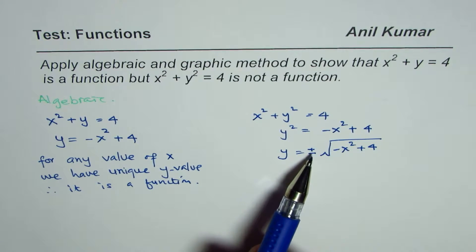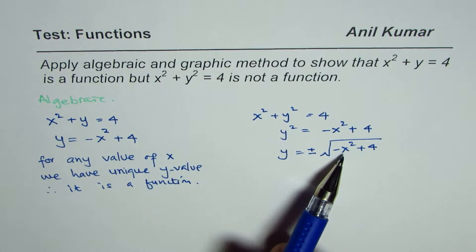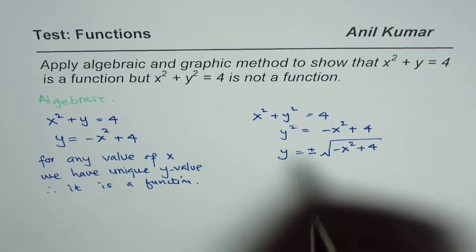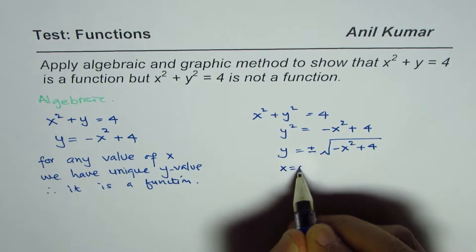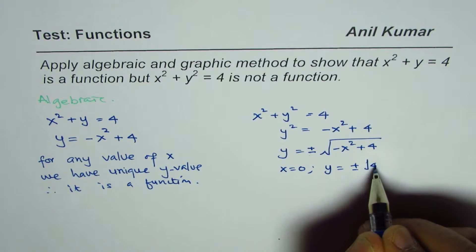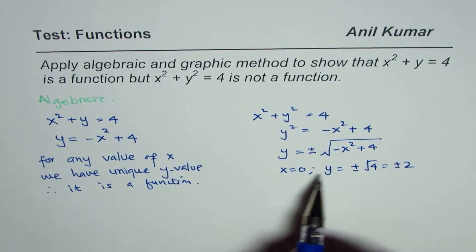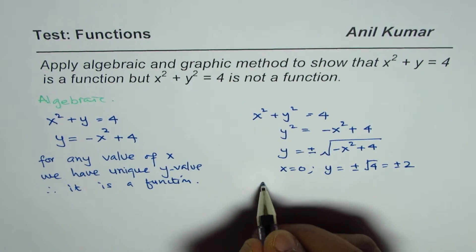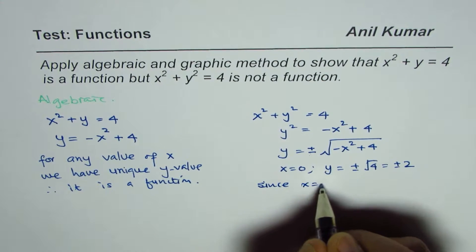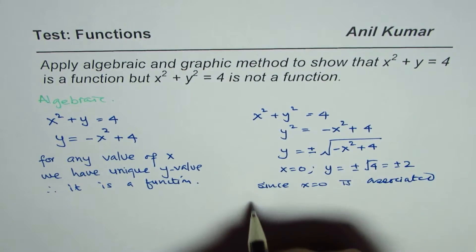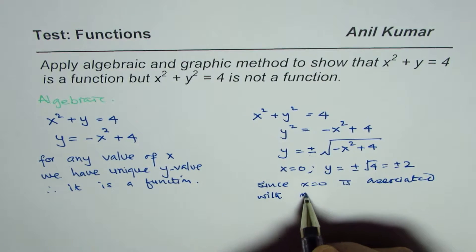Now clearly that indicates that for many x values, the x values will result into two values for y. You can say x = 0, in that case y = ±√4 which is ±2. So y have two values for x = 0. Since x = 0 is associated with more than one value,